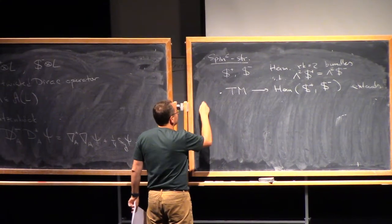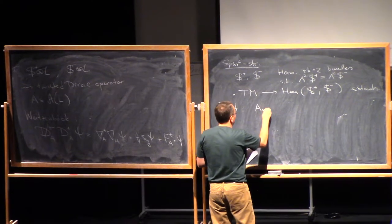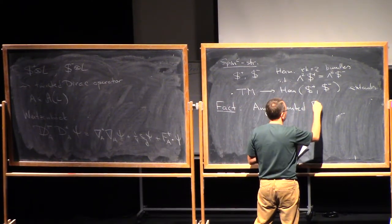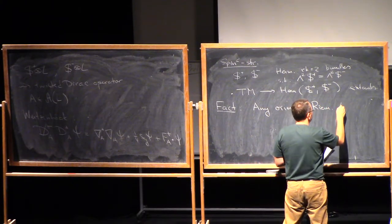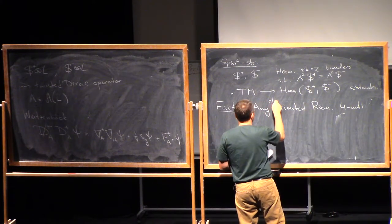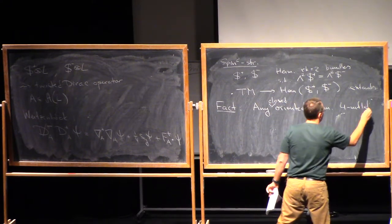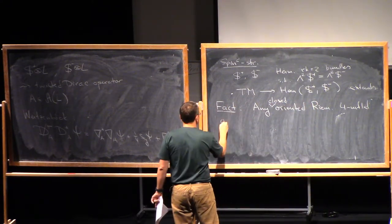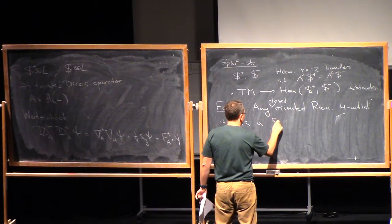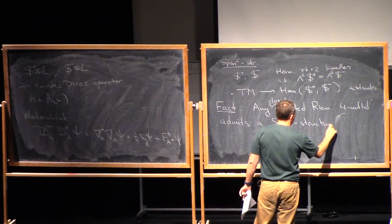So, but the point is that, so here is a fact, any oriented, well, Riemannian, any closed, orientated, Riemannian, four-manifold admits a spin-C structure.